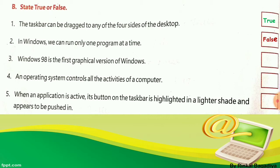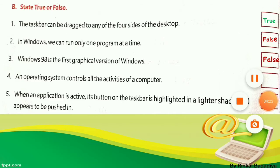Number 3: Windows 98 is the first graphical version of Windows. Is this true? No, it is false. Write in the third box: F-A-L-S-E, false. Windows' first version is Windows 1.0, not Windows 98. That's why it is false.